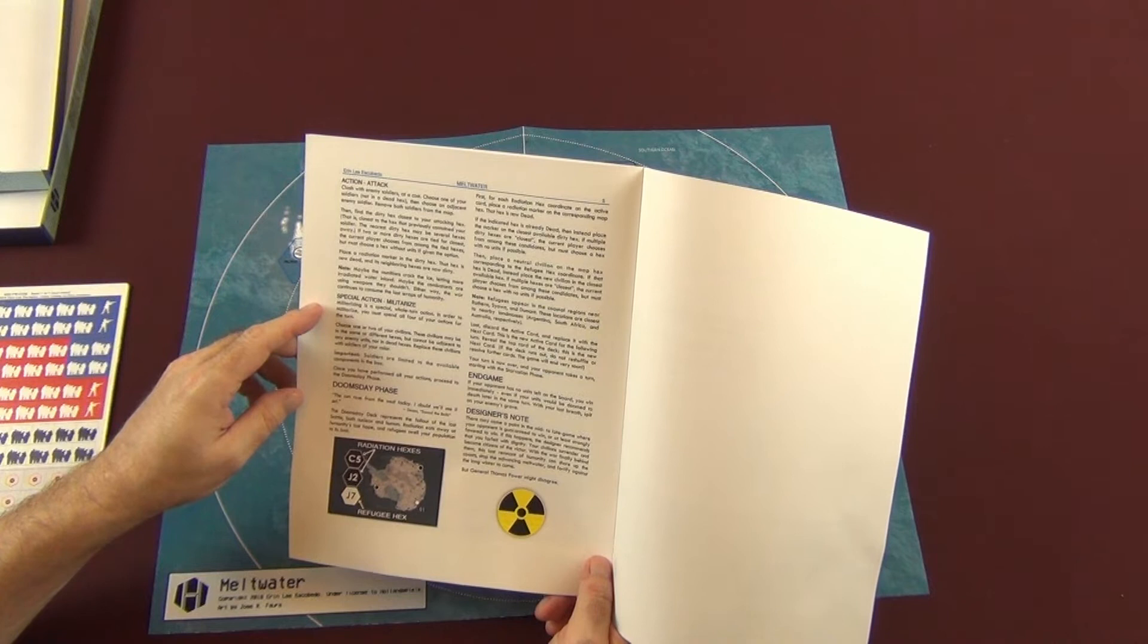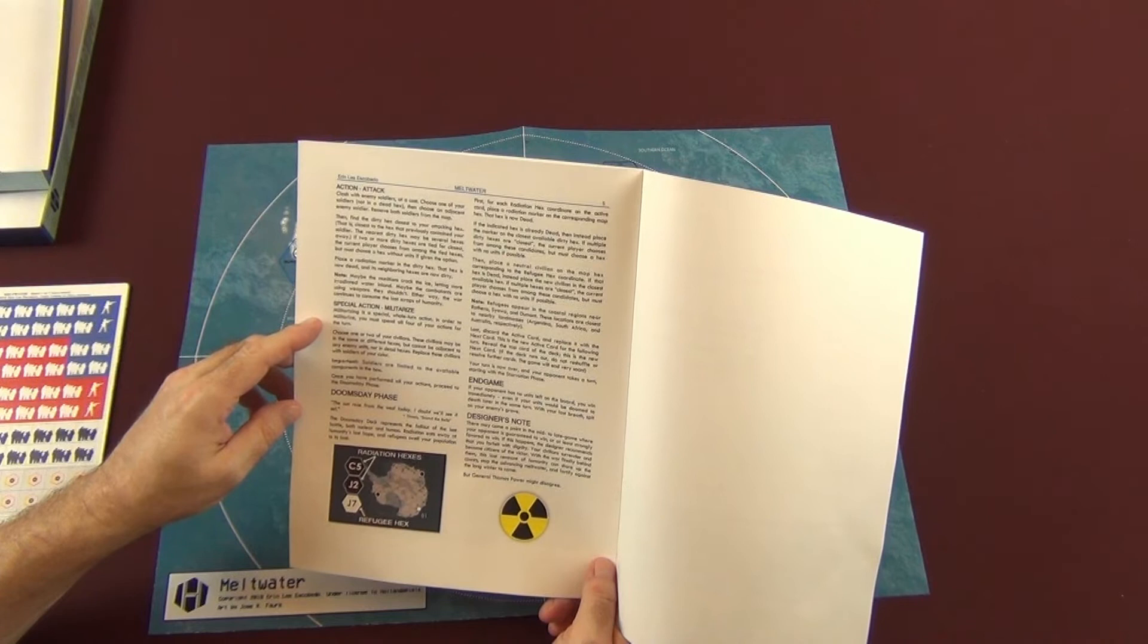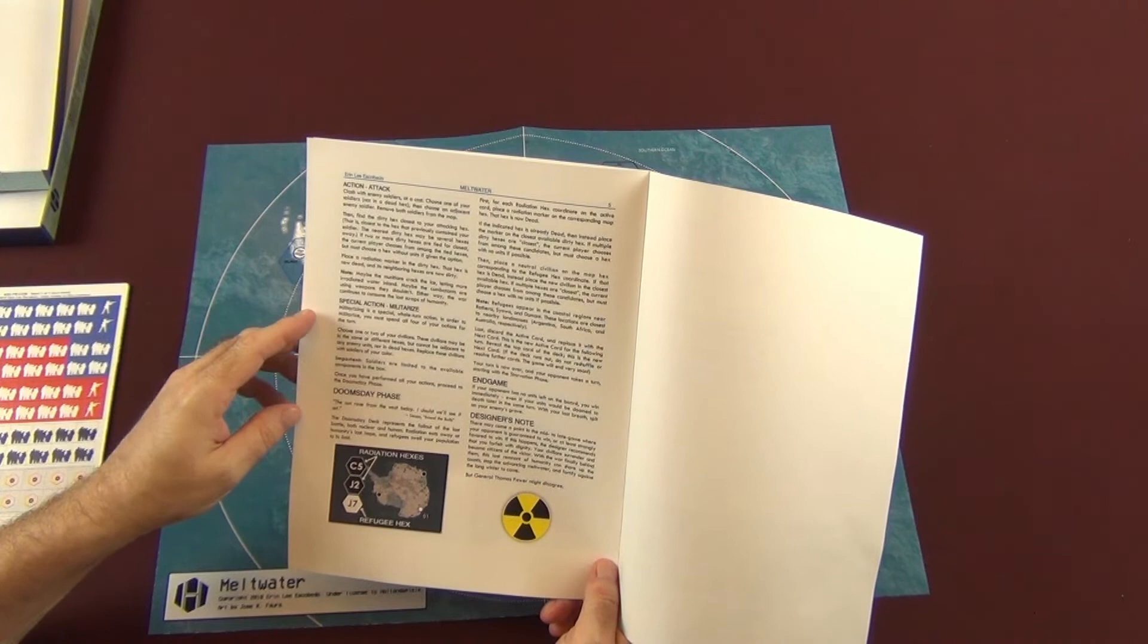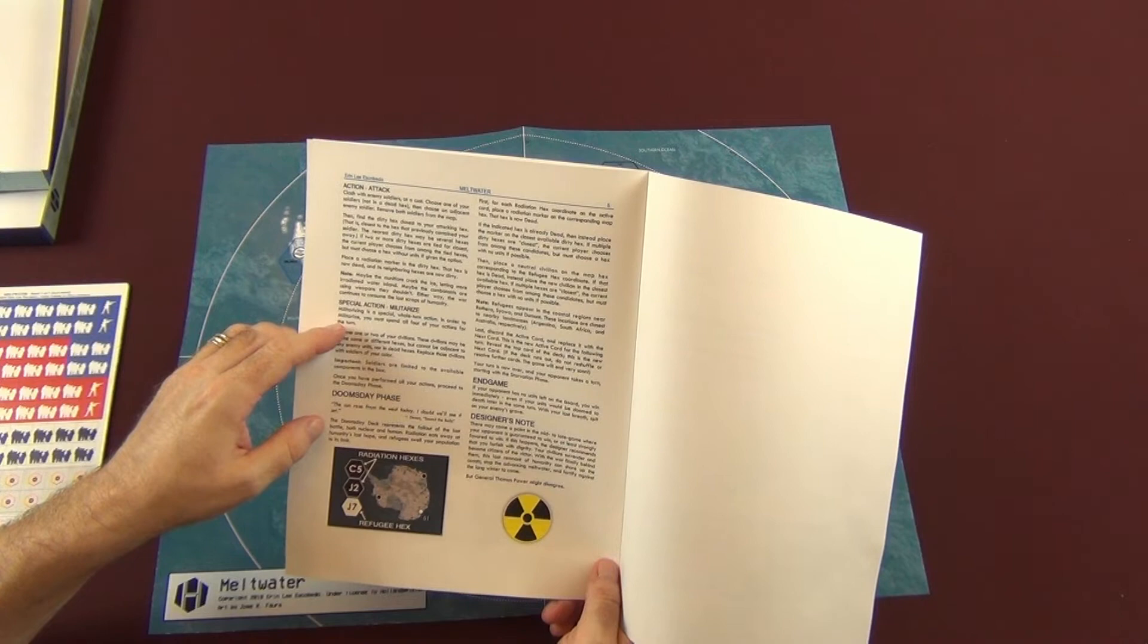Then you have an attack action. Clash with enemy soldiers at a cost. Choose one of your soldiers not in a dead hex, then choose an adjacent enemy soldier. Remove both soldiers from the map. Then find the dirty hex closest to your attacking hex containing your soldier. The nearest dirty hex may be several hexes away. If two or more dirty hexes are tied, place a radiation marker in the dirty hex. That hex is now dead and its neighboring hexes are now dirty.